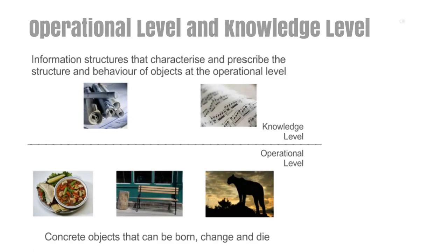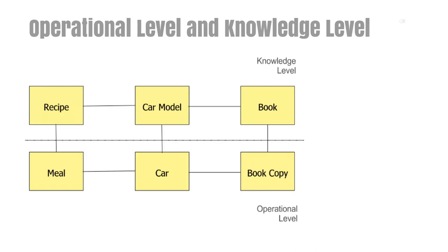On the knowledge level, on the other hand, you will find information structures that characterize and prescribe the structure and behavior of objects at the operational level. Typical examples are blueprints and musical scores. A blueprint can specify how a building should be constructed — it governs the structure and layout of the building. Generally, objects at the knowledge level function as templates for objects at the operational level.